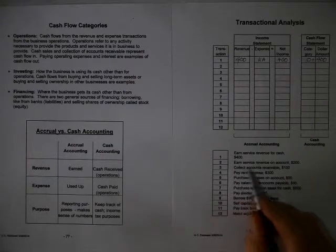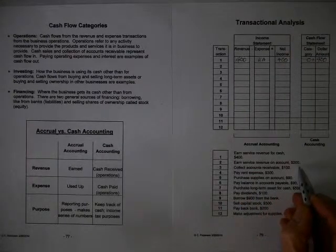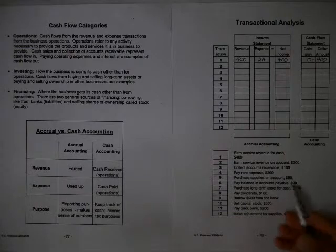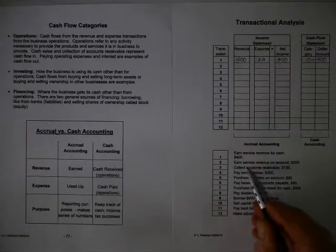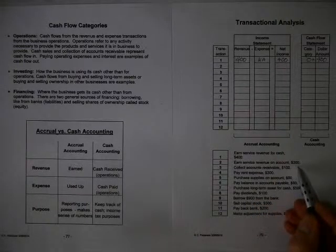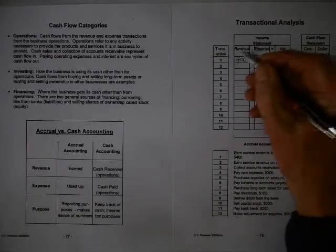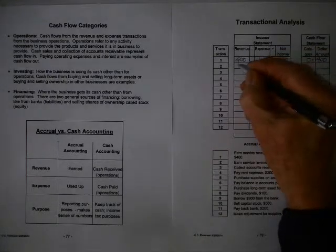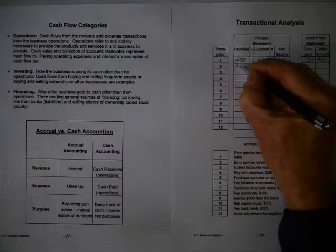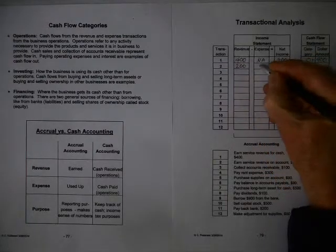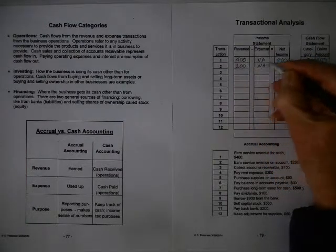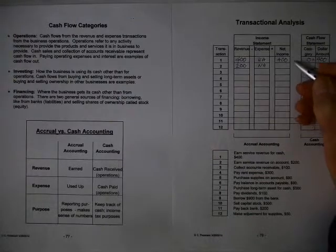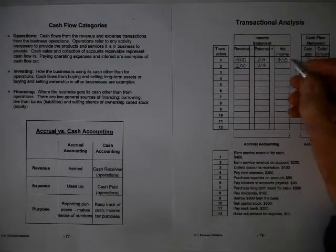Earned service revenue on account, $200. All right, well let's see. On account, we have completed the job and we've earned $200. So therefore, in the income statement, we've earned the right to the money. So we'll put this here. And we'll put an N.A. here for the expense. Now if revenue went up by $200 and expenses remained constant, net income would go up by $200.